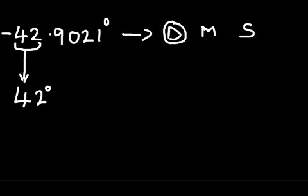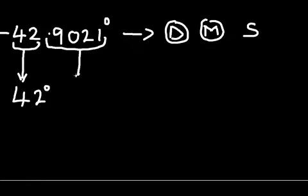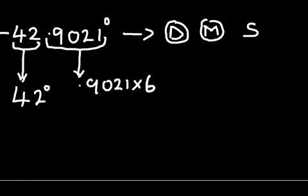Now, to convert to minutes, we are going to take the decimal part, which is 0.9021, and multiply it by 60. So 0.9021 times 60 minutes. The reason why we multiply it by 60 minutes to get a minute conversion is because in every one degree we have 60 minutes.